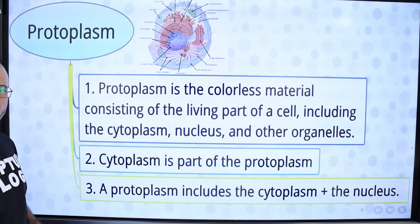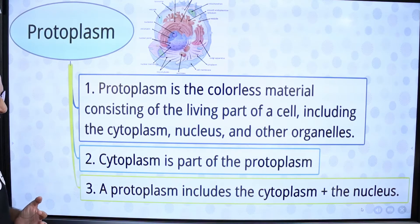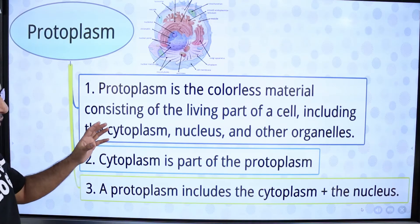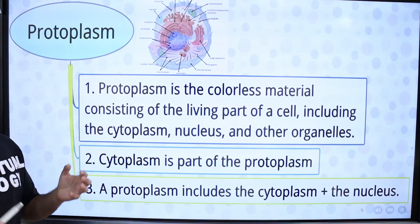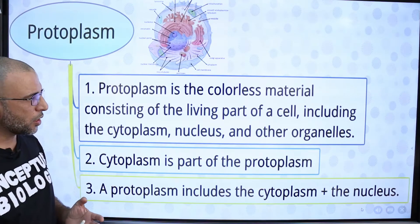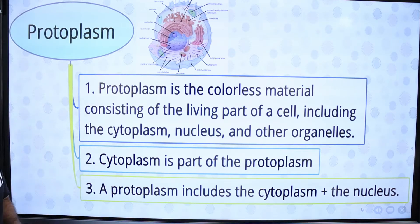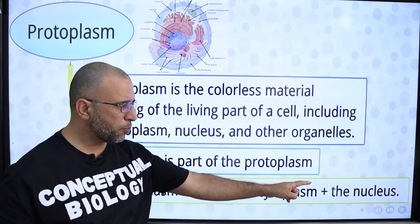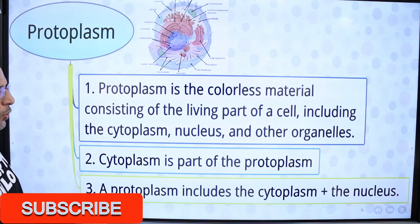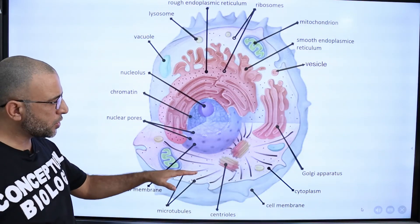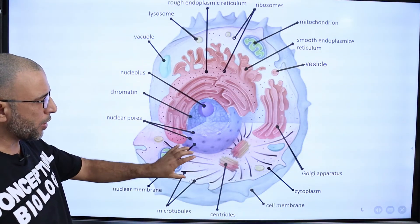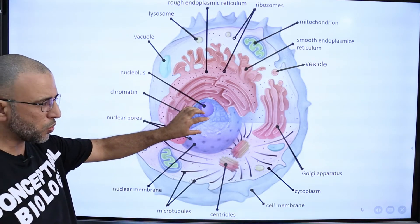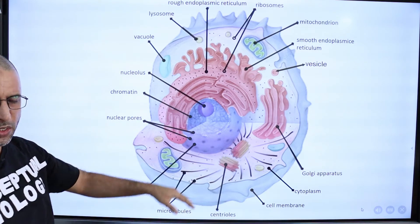What is protoplasm? Protoplasm is the living part of the cell that is surrounded by the plasma membrane. It is a colorless material consisting of the living part of the cell, including the cytoplasm, nucleus, and organelles. Cytoplasm is a part of protoplasm, meaning cytoplasm plus nucleus are collectively known as protoplasm.